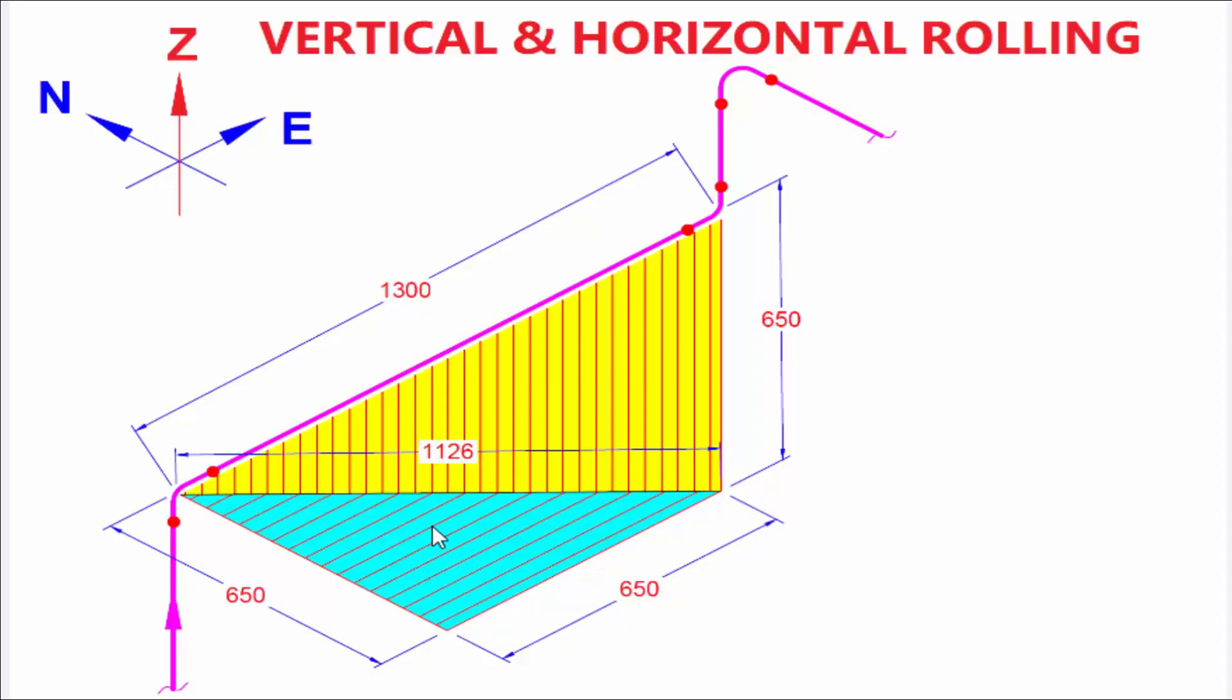First we will consider horizontal rolling, how many mm you have to roll the pipe and which direction we have to calculate. So imagine this coordinates to move this elbow area. Our hatch line is going to south 650 mm and it's going to east 650 mm. So our line is going between south and east.